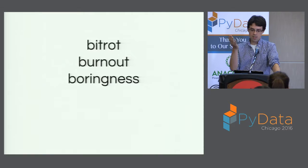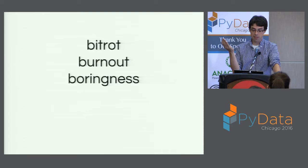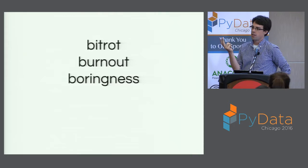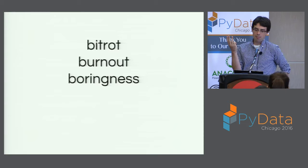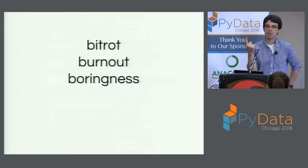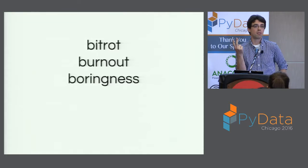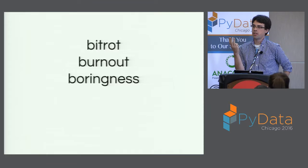That leads to three real challenges with project maintainers and with software — and I like alliterations, though this is one of my poorest alliterative slides: bit rot, burnout, and boringness. If you only have one person that is maintaining something and they are the bottleneck, you're more likely to run into software that bit rots, more likely to run into burnout on community processes, code review, and doing things not everyone wants to do. And if sustainability is very narrowly defined, it's not always that much fun.